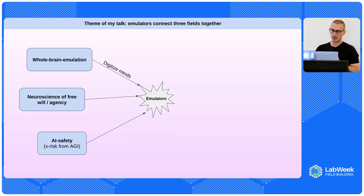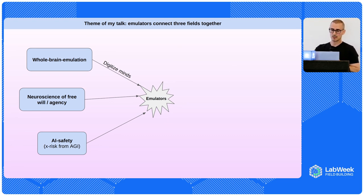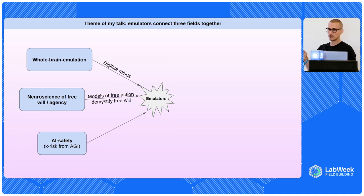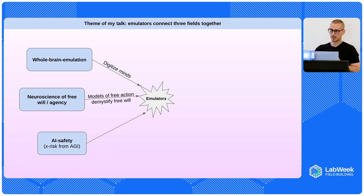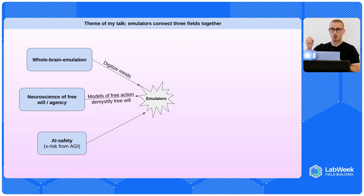Whole brain emulation is the idea that emulators are essentially a digitized version of the mind. How do emulators relate to the neuroscience of free will? If you can build models of free action — which is essentially what emulators are — there'll be these organisms that can do things very much like humans or other mammals. You're going to demystify a lot of the free will notion. If you have stochastic models of behavior, that's going to quantify what it means to be free.